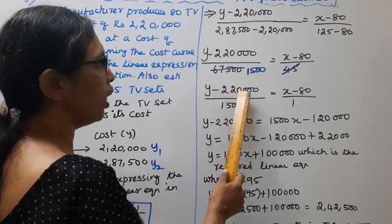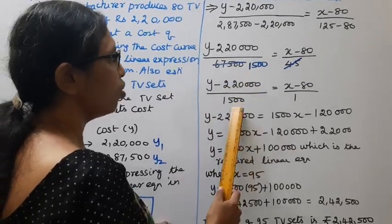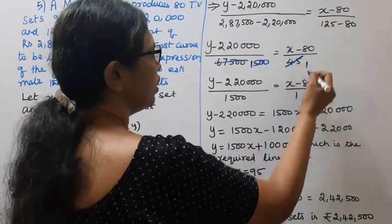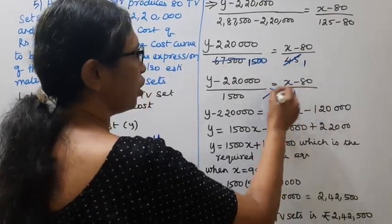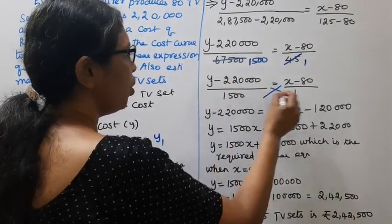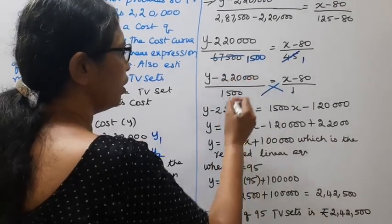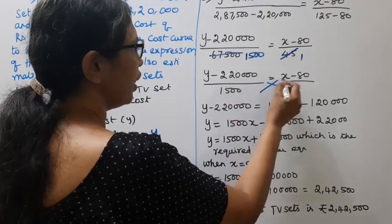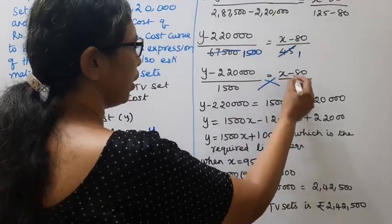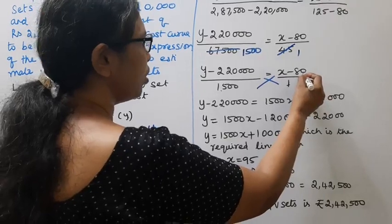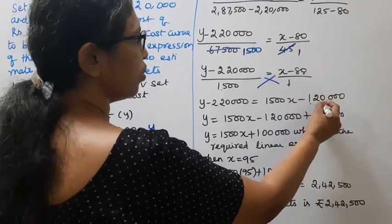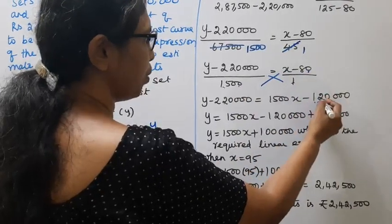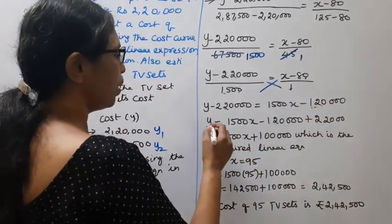Y minus 2,20,000 divided by 1500 equal to x minus 80 by 1. Cross multiply. 1 into y minus 2,20,000 equal to 1500 into x is 1500x minus 1500 into 80 is 1,20,000. This is the linear equation.